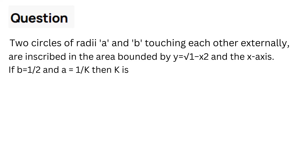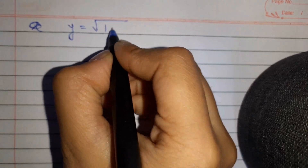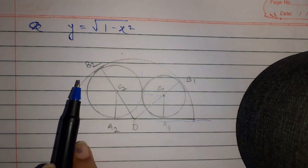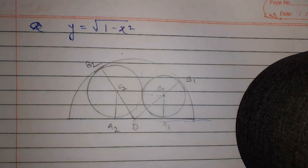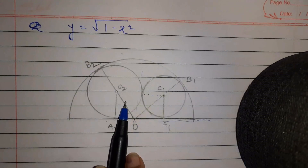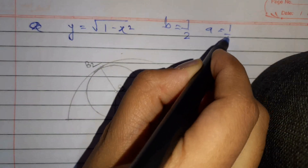The question says two circles of radii a and b touching externally are inscribed in an area bounded by y = √(1 - x²) and the x-axis. If b = 1/2 and a = 1/k, then k is what? So we label the circles: S1 has radius a = 1/k and S2 has radius b = 1/2.